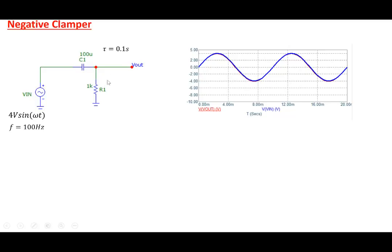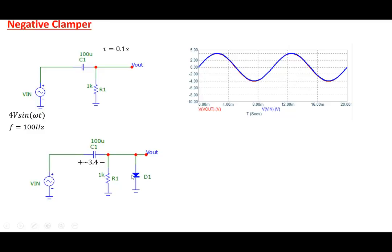Things become interesting if we add a diode. When the waveform goes positive, earlier the capacitor could not charge because the time constant was too large. But now with the diode, the moment the input voltage exceeds about 0.6 or 0.7V, the diode starts conducting and provides a very low impedance path. The capacitor will charge up to about 3.4V (accounting for 0.6V diode drop with a 4V input).